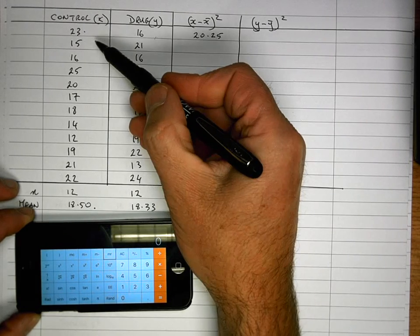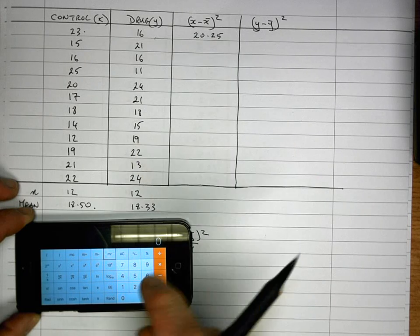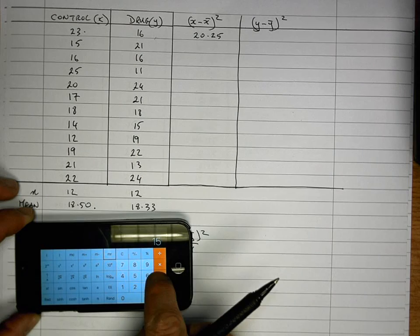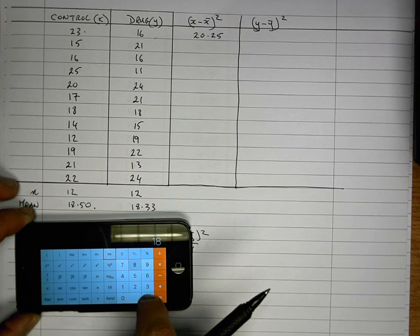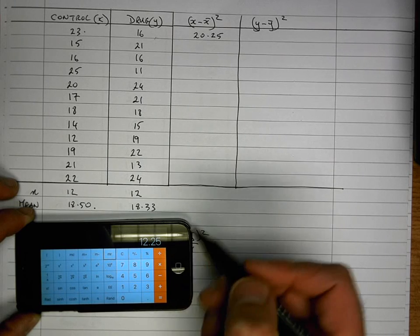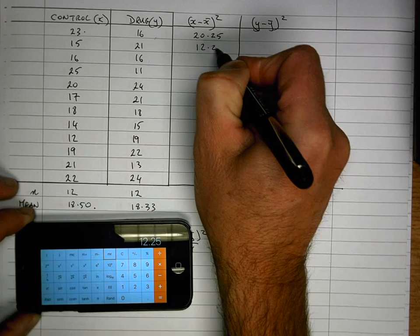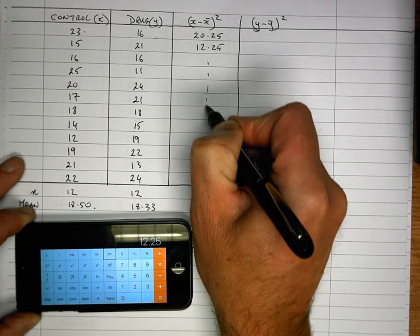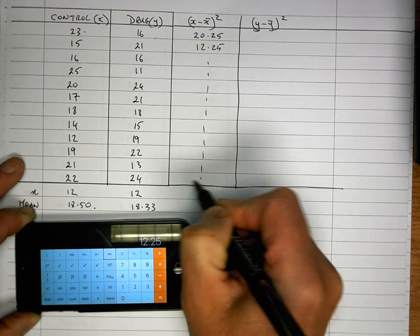Then go ahead and do the next value of x, which is 15. So that's going to be 15 minus 18.5. And we square that value and we get a result of 12.25. And we keep doing that for all the values for x until we get down to the last value.